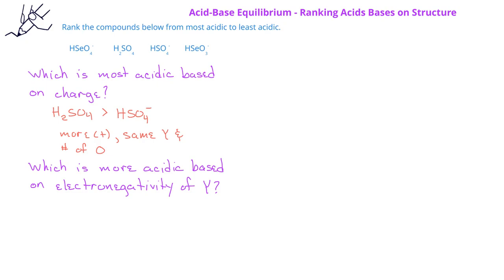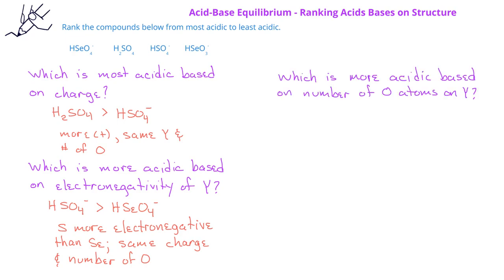If we look at electronegativity, we might predict that HSO4- is more acidic than HSeO4- because since S is above selenium on the periodic table, S has a higher electronegativity, and so HSO4- is more acidic than HSeO4-. We could also look at the number of oxygens in related compounds. HSeO4- would be more acidic than HSeO3- because the HSeO4 has more oxygens.